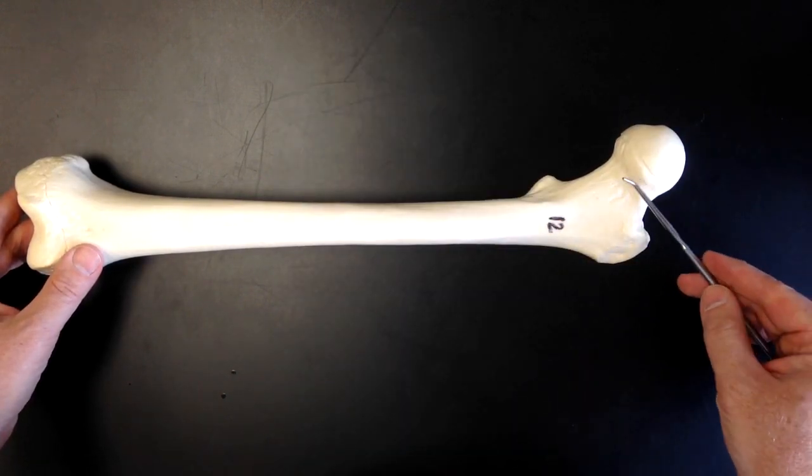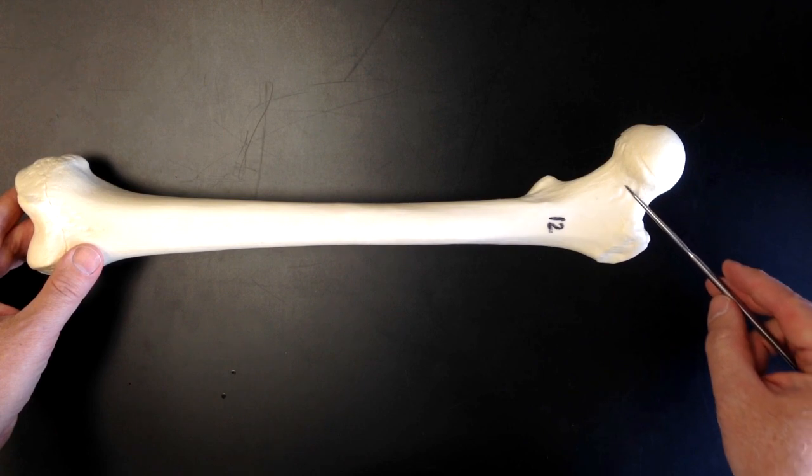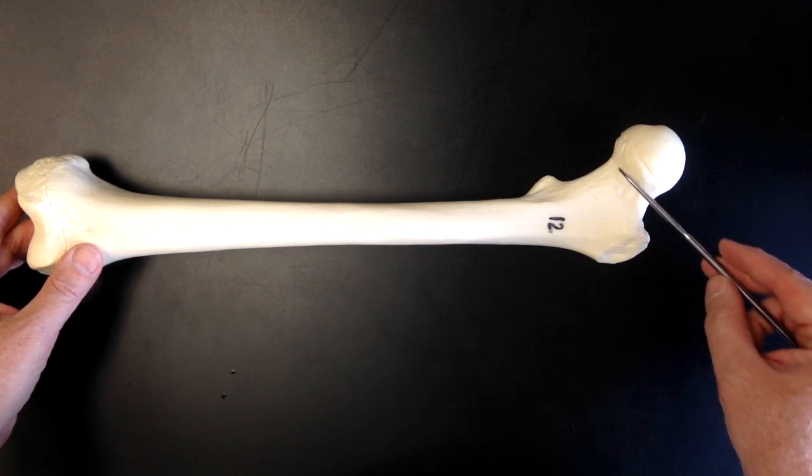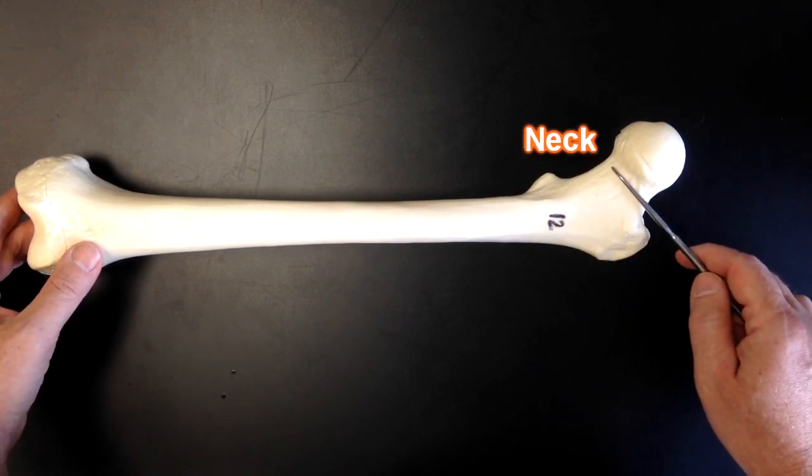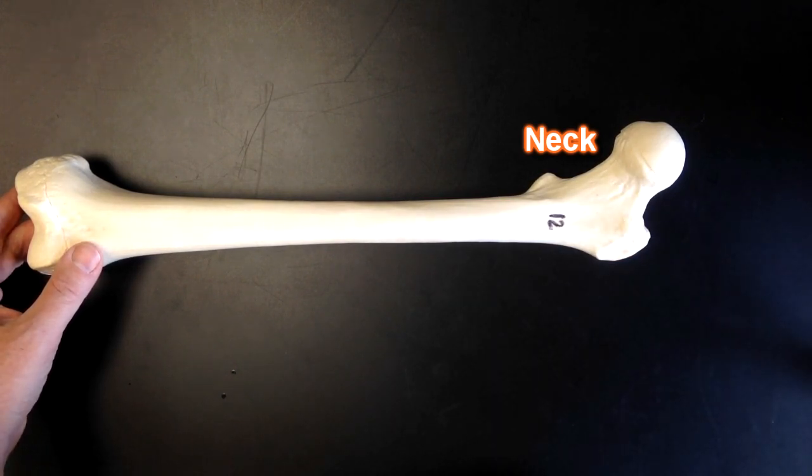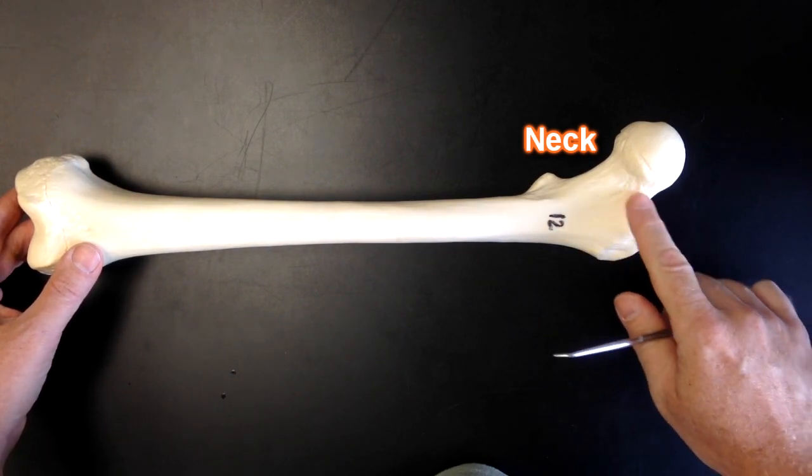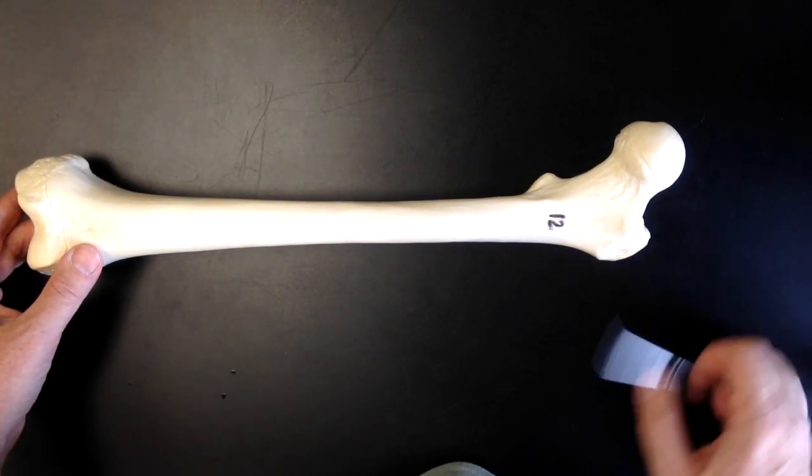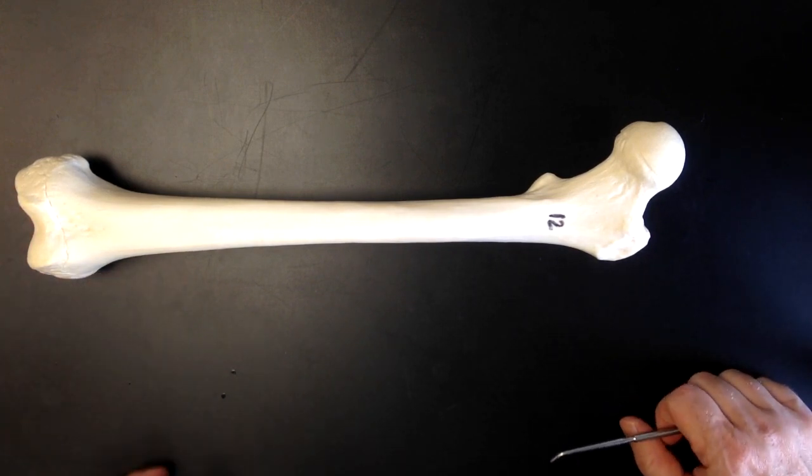Down distally, we move in that direction, we see this area gets narrower here and this area is known as the neck of the femur. Okay, just like our neck on our body is narrower than our head. Early anatomists thought this looked like a neck and this looked like a head, so that's how they got their names.